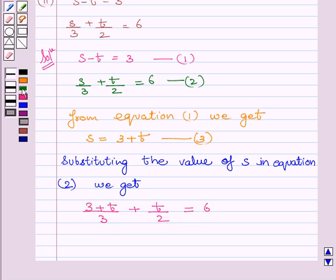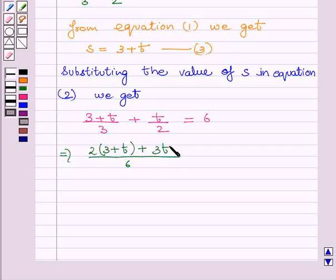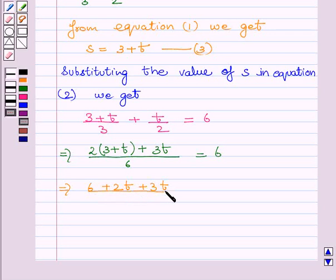We will take the LCM equal to 6, so 2 multiplied by 3 plus t plus 3t upon 6 is equal to 6, which is equal to 6 plus 2t plus 3t upon 6 equal to 6.